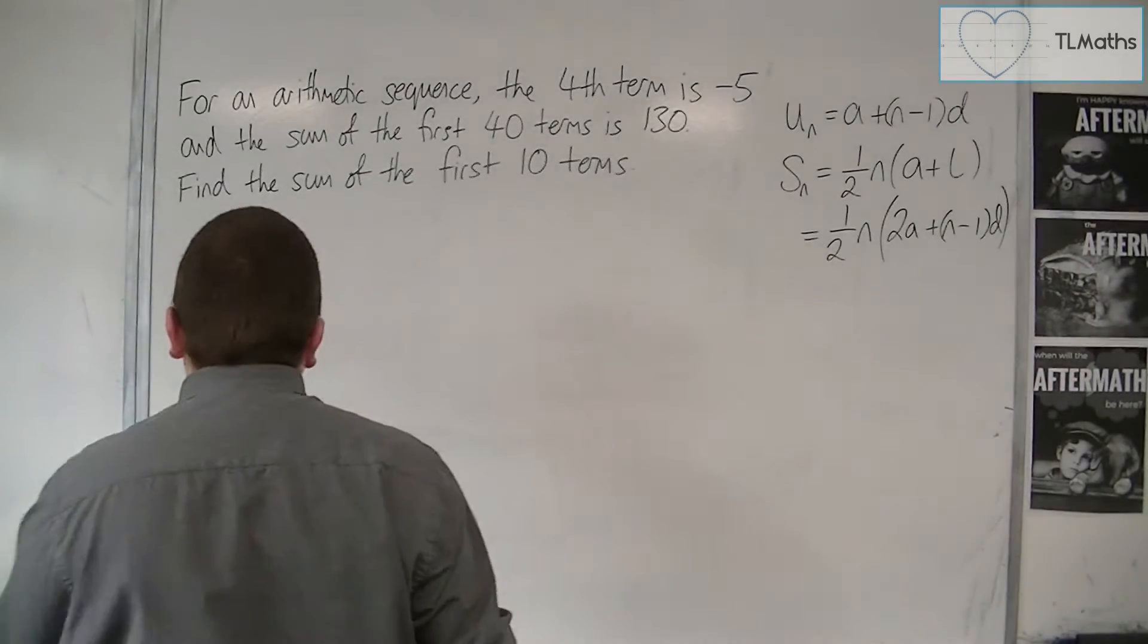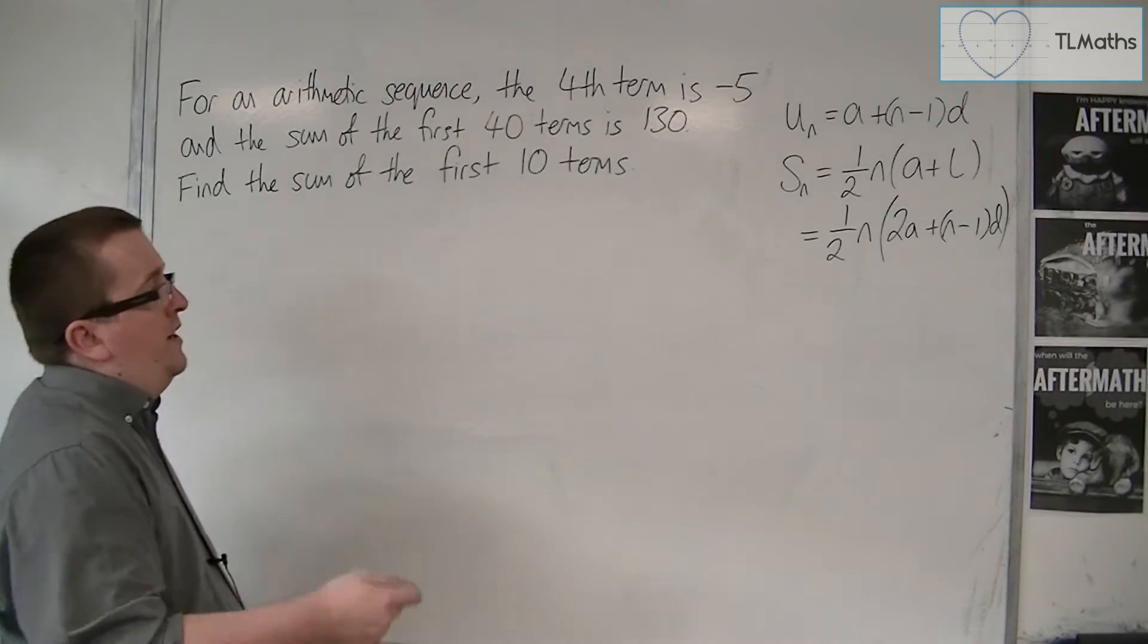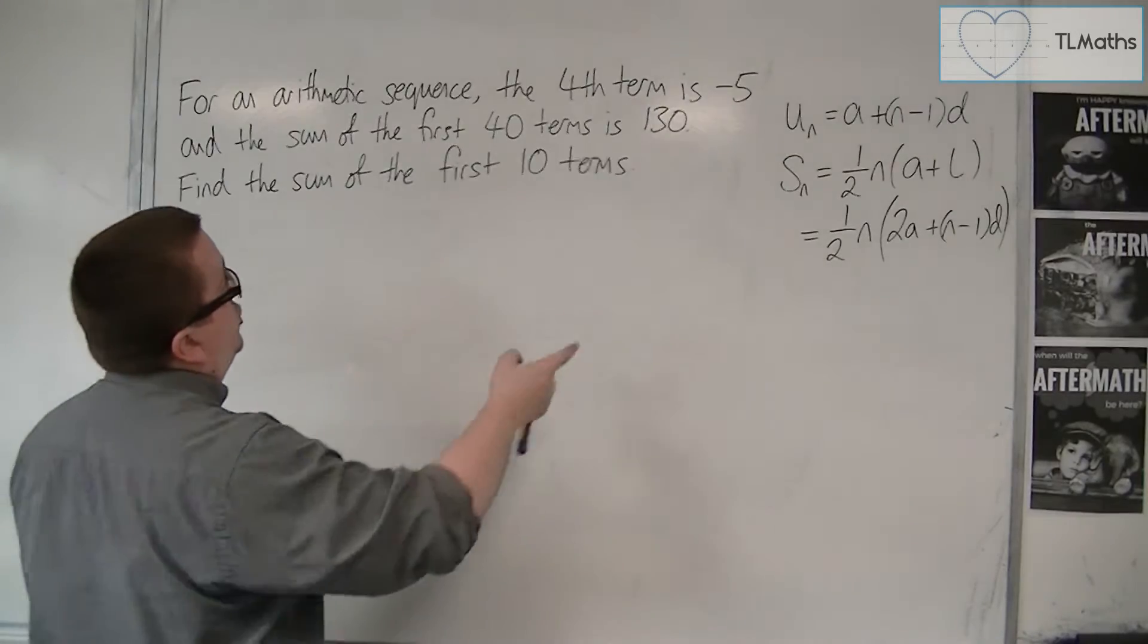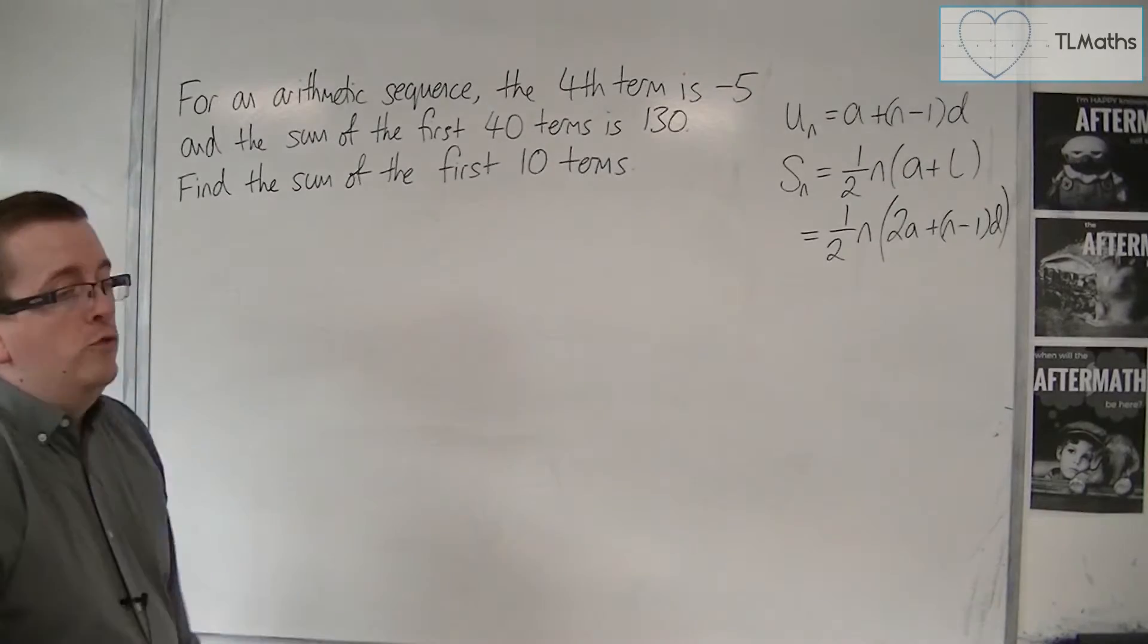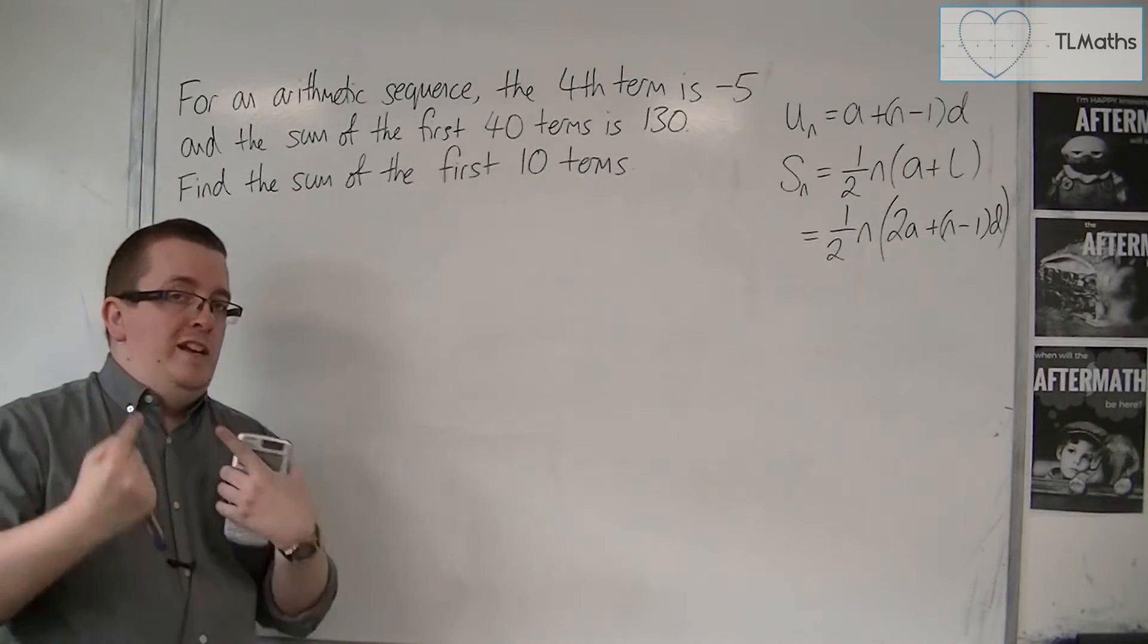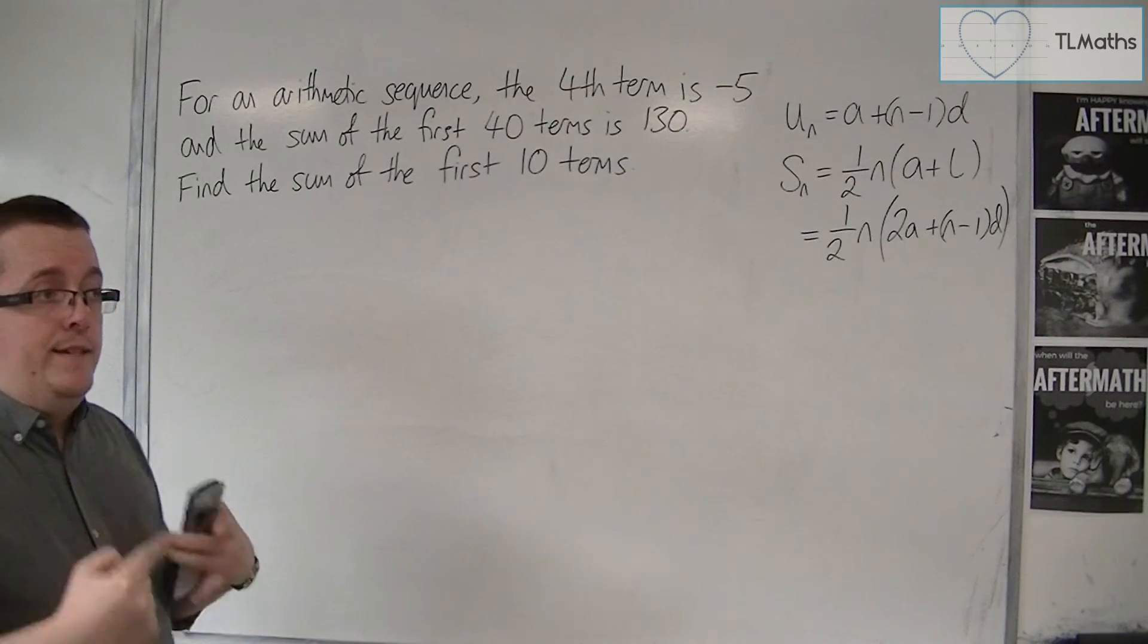We're going to have to go about this in a quite similar way as we did in the previous video. We're going to take our two bits of information, that the fourth term is minus 5 and the sum of the first 40 terms is 130, and convert those into algebra, into two equations involving a and d.